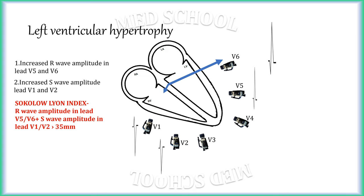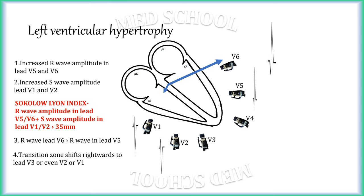Normally, lead V5 has the tallest R wave. As the QRS vector shifts leftward, it becomes more aligned toward the V6 electrode; hence, lead V6 will have the tallest R wave. The transition zone — that is, the equiphasic QRS — shifts to the right and is present in lead V3 or even in V2 or V1.